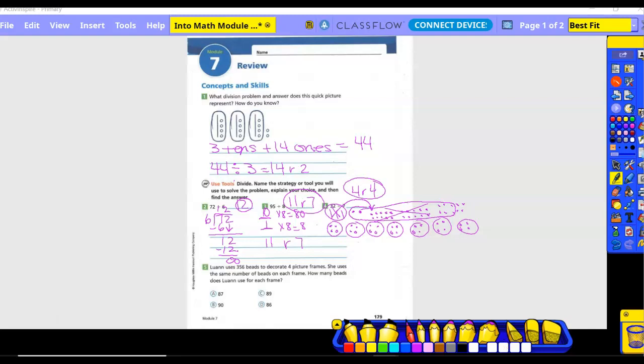Number five. Luanne uses 356 beads to decorate four picture frames. She uses the same number of beads on each frame. How many beads does Luanne use for each frame? So we're going to circle 356 beads, four picture frames. How many beads does Luanne use for each frame? So what is going to be my problem? 356 divided by four.